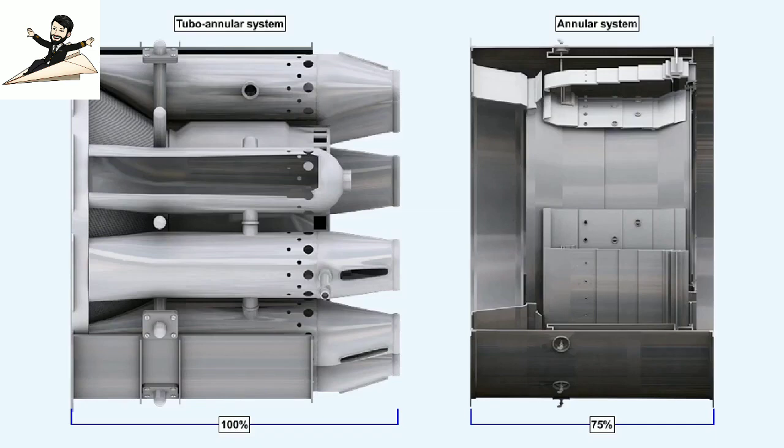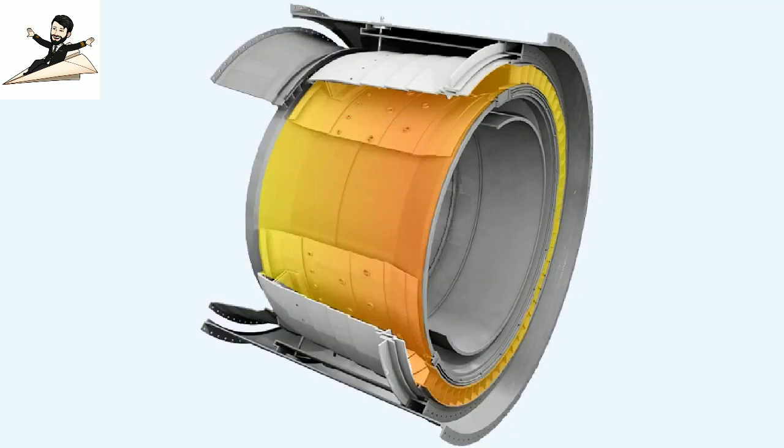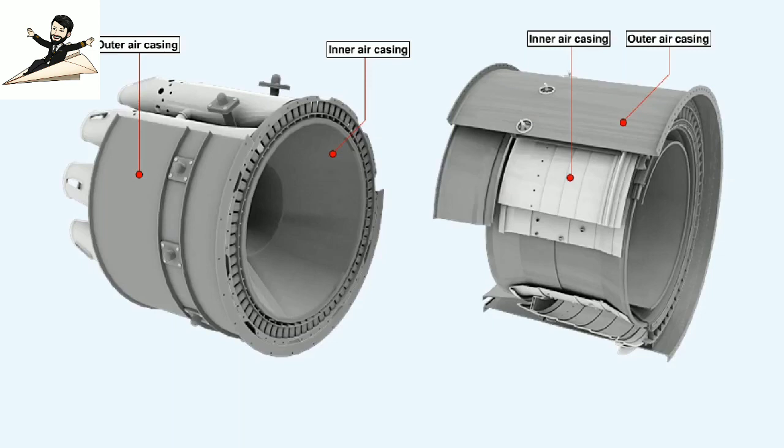For the same power output, the length of the annular chamber is only 75% that of a tubo-annular system of the same diameter. There are no flame propagation problems. Compared to a tubo-annular system, the air casing area is less, consequently less cooling air is required.